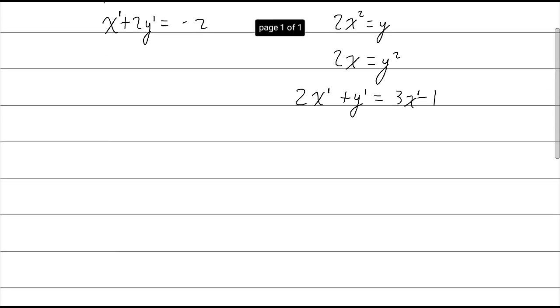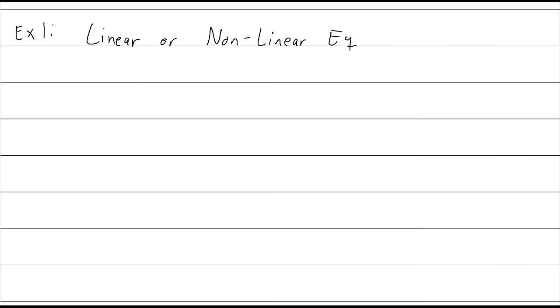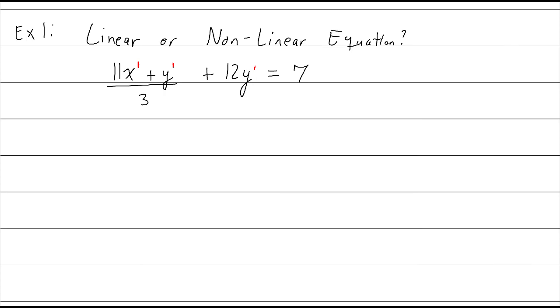It's not hard to spot a linear or nonlinear equation. So let's do a quick example. Example 1: is this a linear or a nonlinear equation? Let's make it look weird — 11x plus y over 3 plus 12y is equal to 7. I see x and y. The exponent on x is the understood hidden 1. The exponents on y are also 1s, although there are two y terms. But there's no y squared, so this is a linear equation.